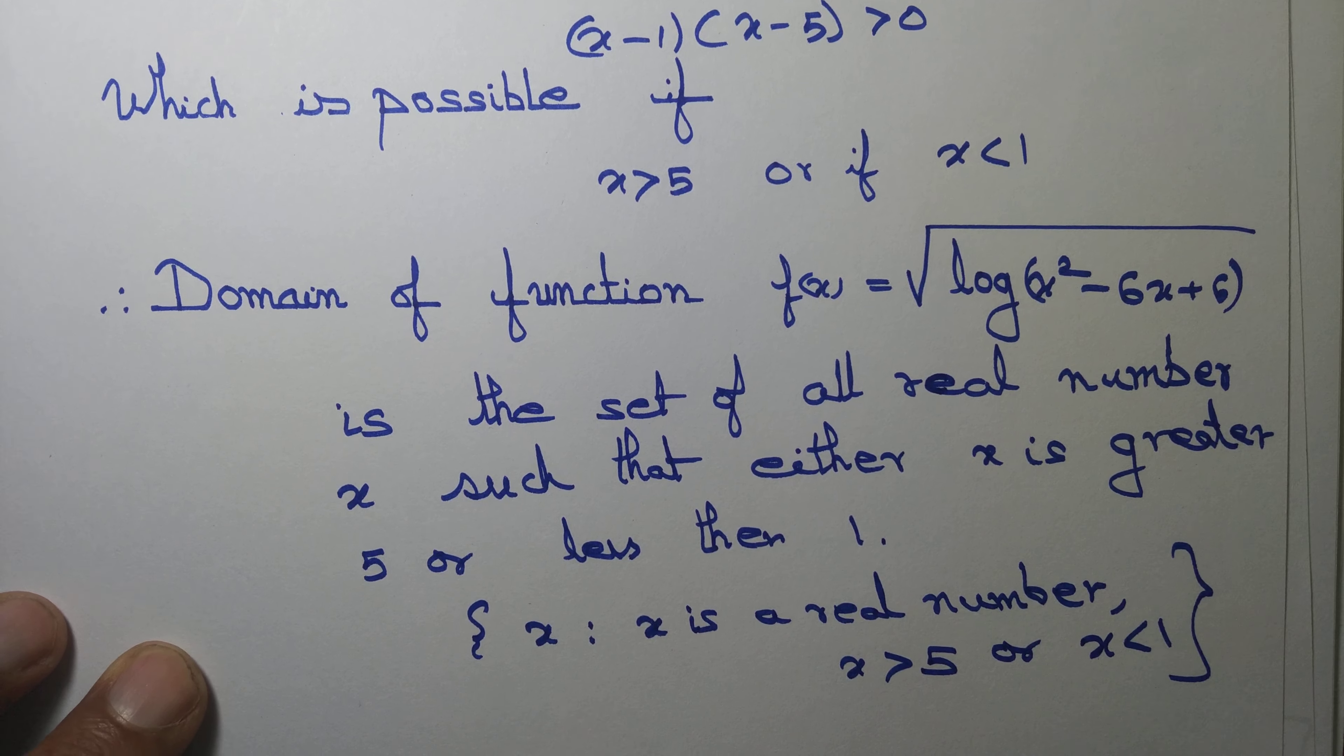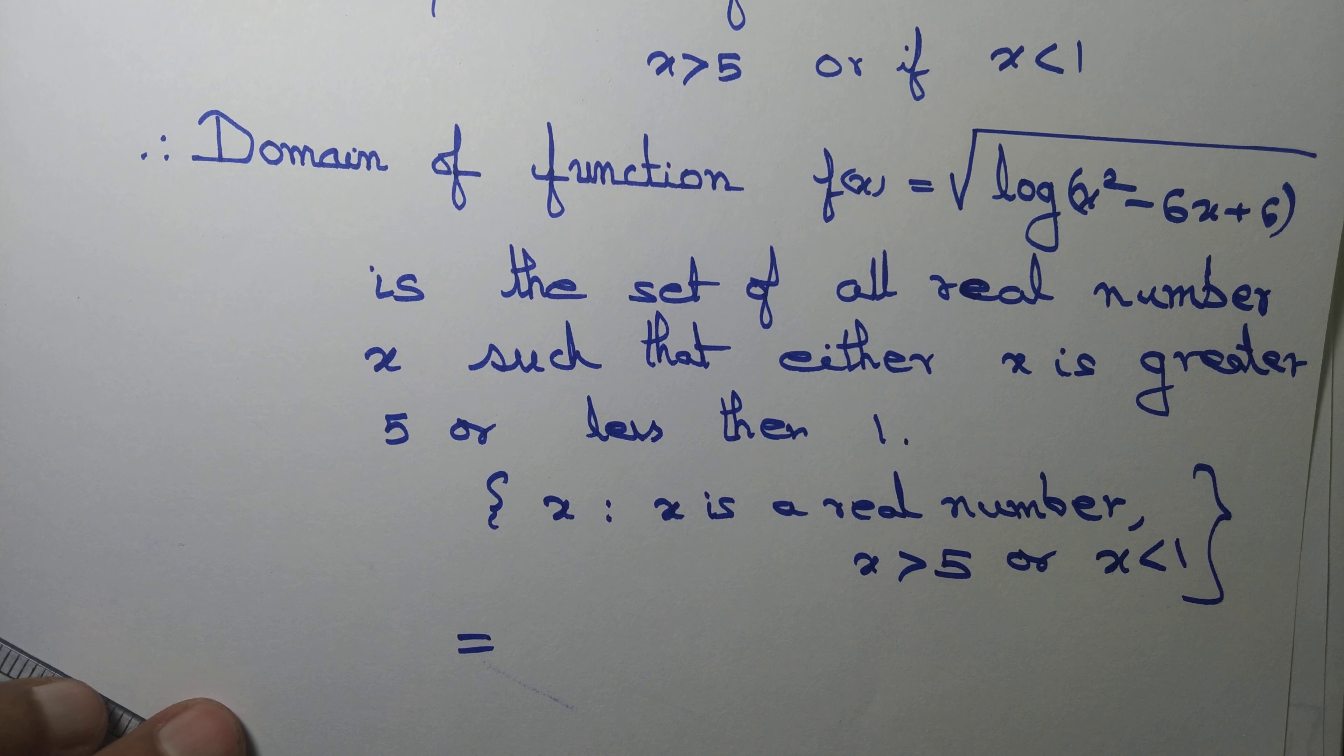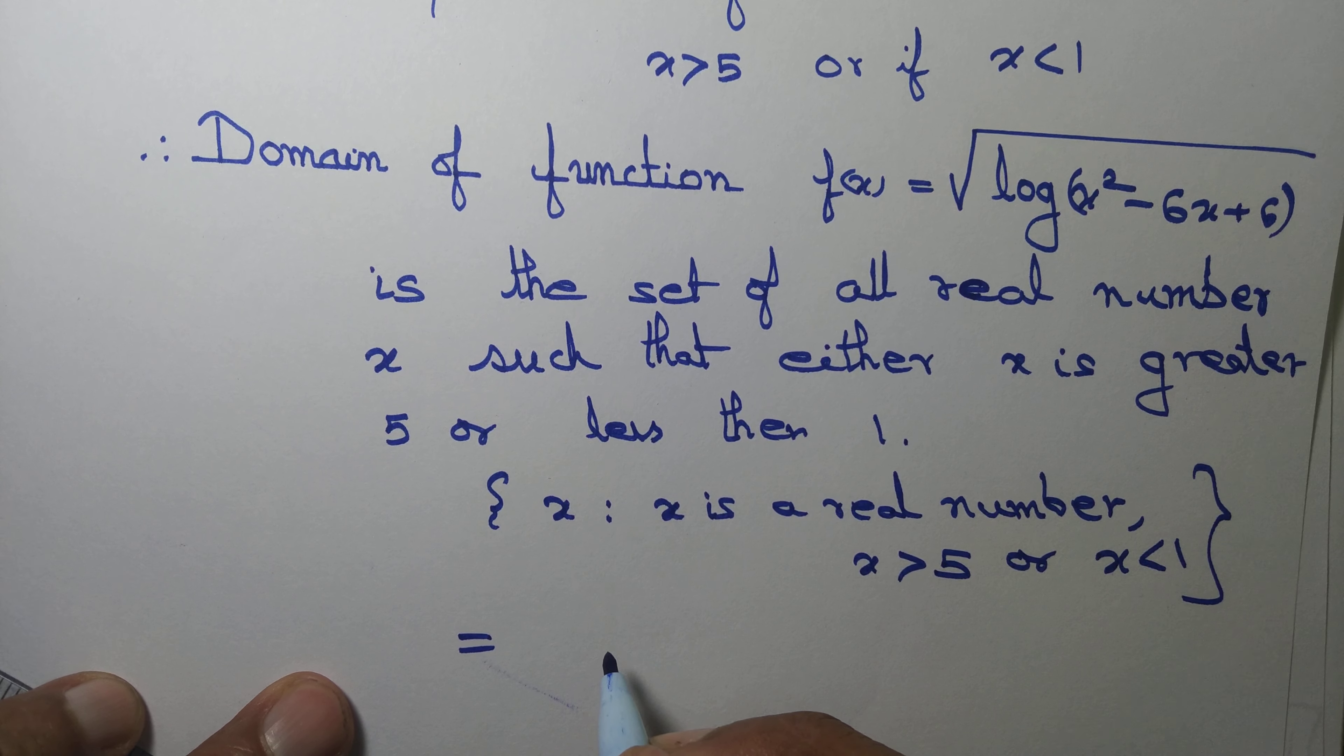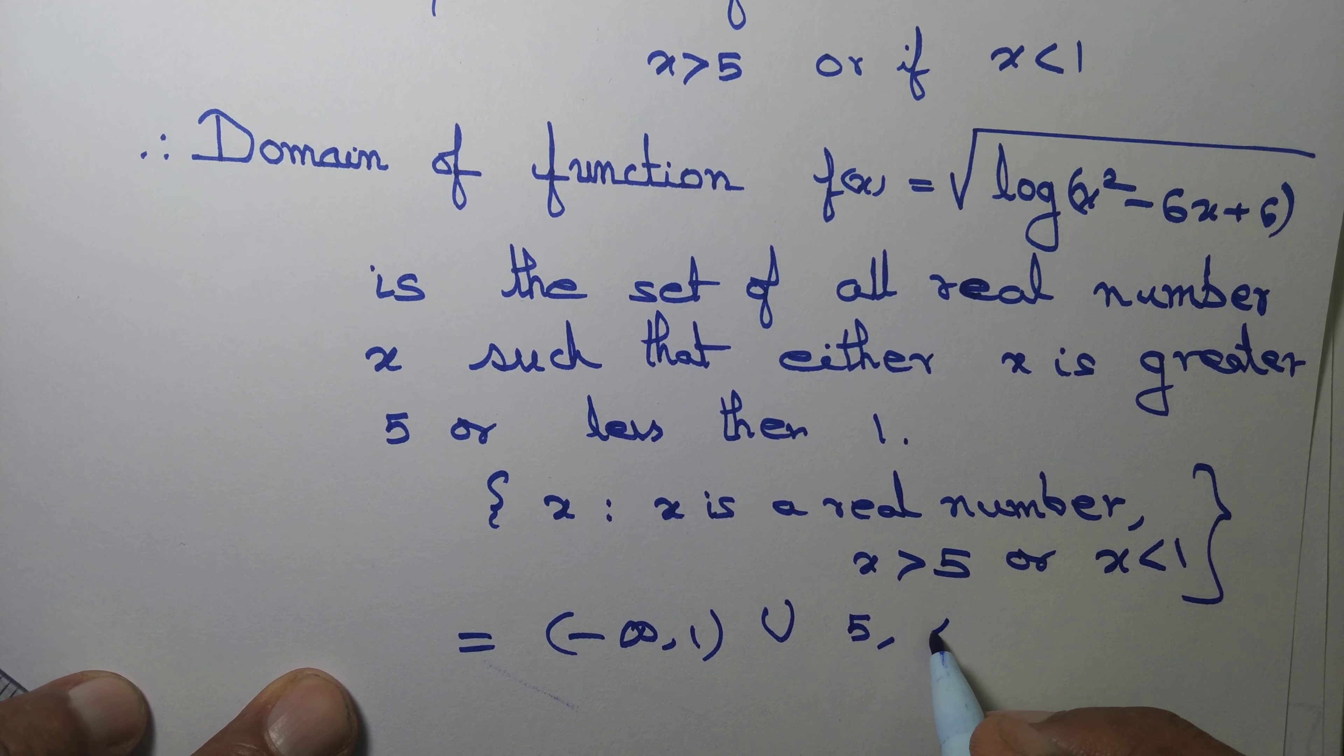Of course, it can also be written in the form of interval: minus infinity to 1 union 5 to infinity.